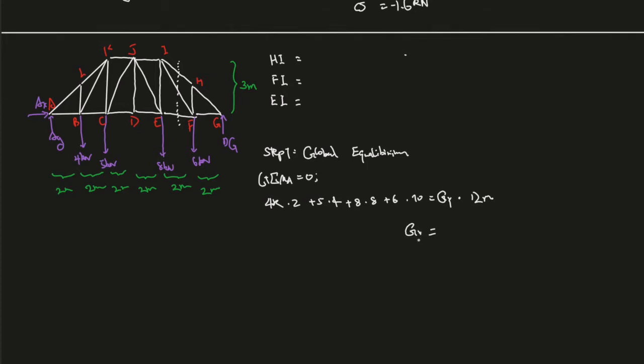So the force at G, the moments generated by G should be equal to this number over here. So plug everything into your calculator, G should get you 12.6 kilonewtons. And now we have everything. Let's go ahead and start drawing.